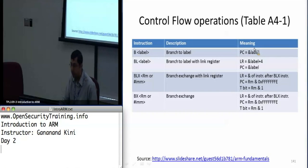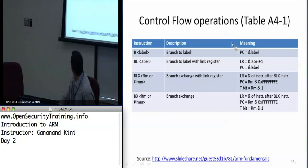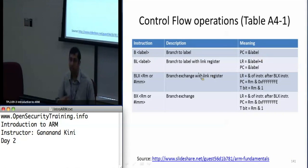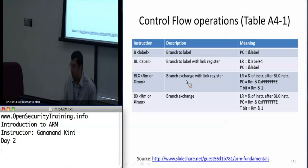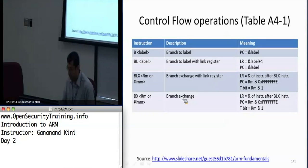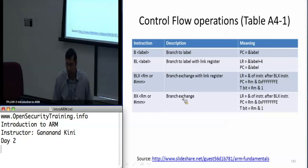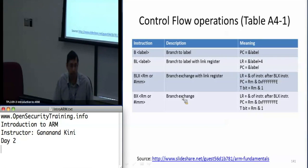Every time you say a branch label, the PC is assigned the address of that label, and that causes a branch to occur. For branch with link and BLX — branch exchange with link — the link register gets updated with the address of the label plus 4, and the PC gets assigned the address of the label.